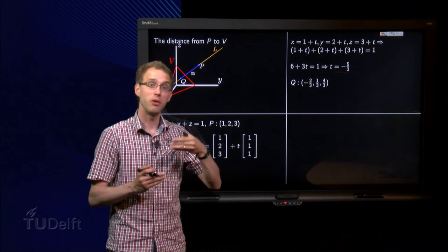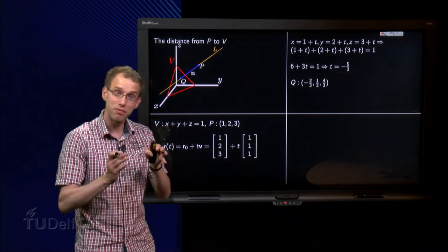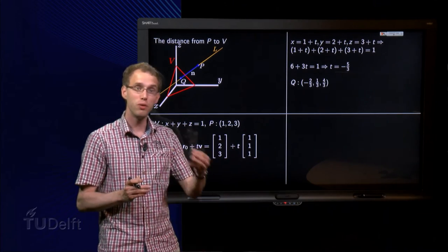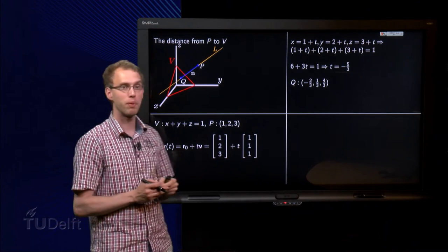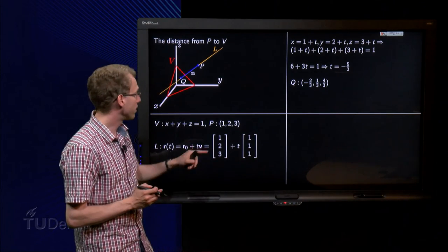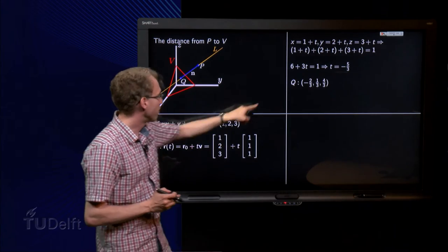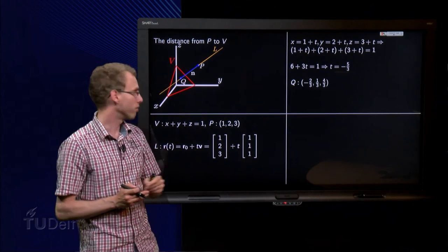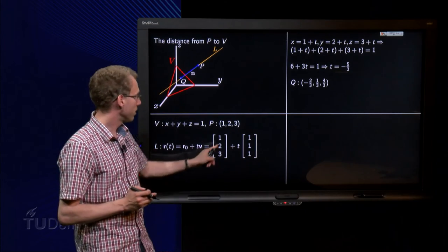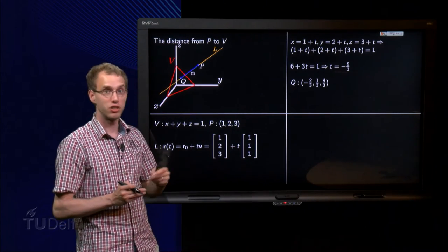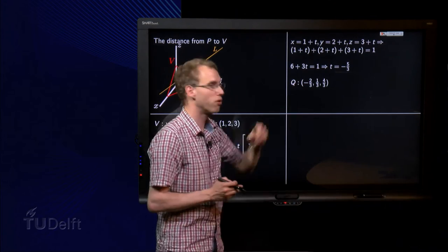But now we know T equals minus 5 over 3, now we can find Q. Because for Q we know that T has to be equal to minus 5 over 3. Substituted in the parametric equation, we find Q: 1 minus 5 over 3, minus 2 over 3; 2 minus 5 over 3, 1 over 3; 3 minus 5 over 3 equals 9 over 3 minus 5 over 3, equals 4 over 3.